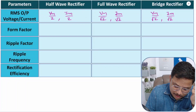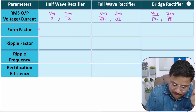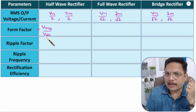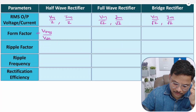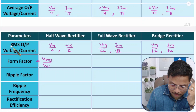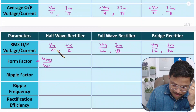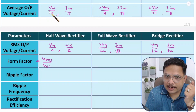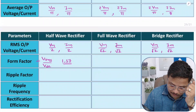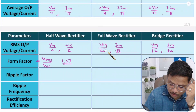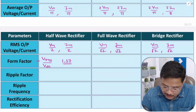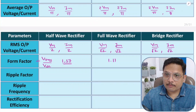Now the form factor. Form factor is calculated as Vrms divided by Vdc (average voltage). For a half wave rectifier: Vrms is Vm/2 and Vdc is Vm/π, so the ratio gives π/2, which equals 1.57. For a full wave rectifier: Vrms is Vm/√2 and Vdc is 2Vm/π, giving a form factor of 1.11. The bridge rectifier has the same form factor as the full wave rectifier: 1.11.